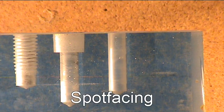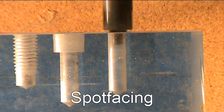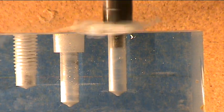Spot facing is used a lot of times on casting when the surface is uneven to help the fastener sit down level on the top of the surface.